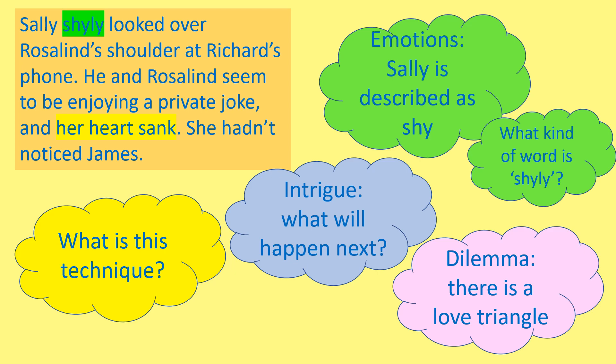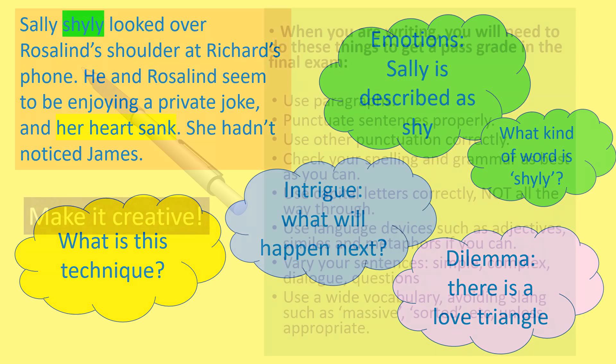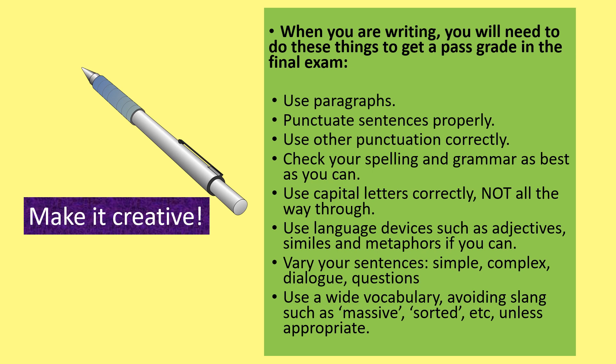The things used in this passage are called language techniques. As well as making your writing engaging by including a surprise and language techniques, you also need to get the technical aspects of your writing right. You should be using paragraphs, punctuating your sentences properly, using other punctuation correctly, checking your spelling and grammar as best as you can. Use capital letters correctly. Use language devices such as adjectives, similes and metaphors if you can. Vary your sentences using simple, complex, dialogue and questions. Use a wide vocabulary, avoiding slang such as 'massive' and 'sorted' — unless it's appropriate.